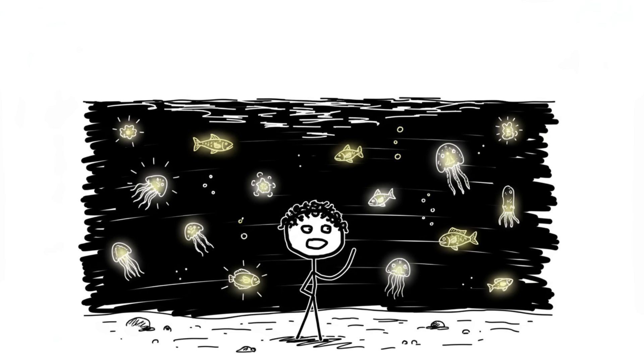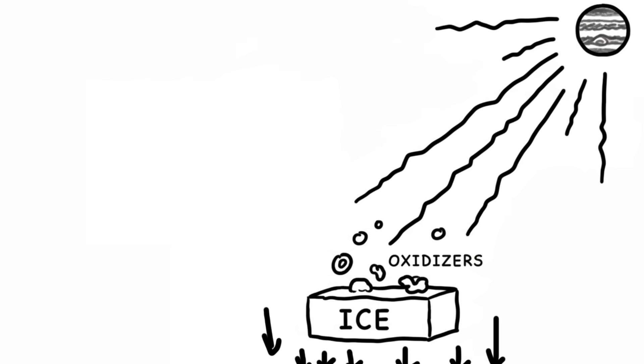But here's where it gets creepy. Researchers think that the ocean floor might be lit up—not by light, obviously, but by chemosynthesis—life forms creating energy without sunlight, clustered around hydrothermal vents, much like those found in Earth's deep ocean. But even cooler is the idea that the intense radiation from Jupiter smashing into the ice crust could be creating chemical oxidants that sink down, creating a source of energy for life.